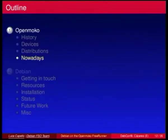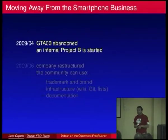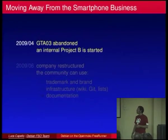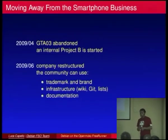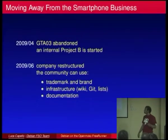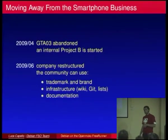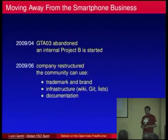In April 2009, the GTA03 was abandoned due to high costs, and they decided to move to Project B — still not a very clear project — going away from the smartphone business. Two months later, the company was restructured. Many people were fired, and the community was given the OpenMoko trademark and brand. Distributions developed by OpenMoko became fully community. The infrastructure — website, wiki, git, mailing lists, and all documentation — was given to the community. The OpenMoko company now works on something other than smartphones.